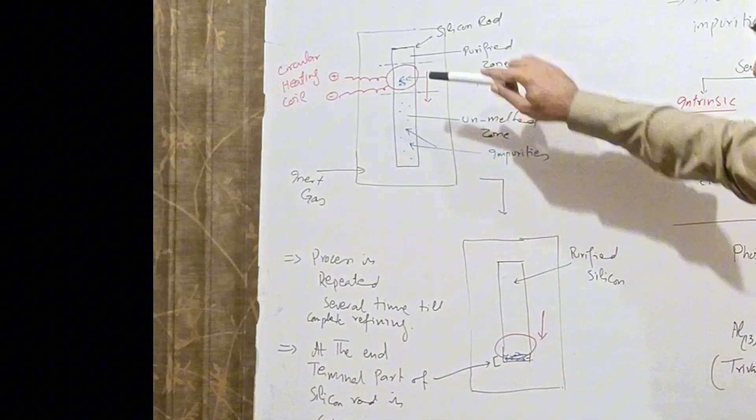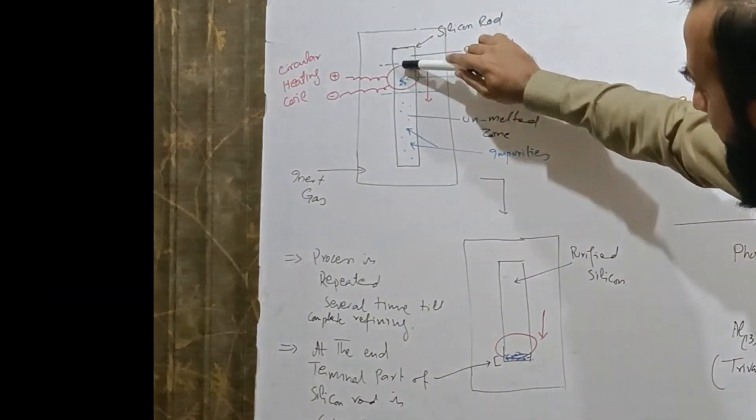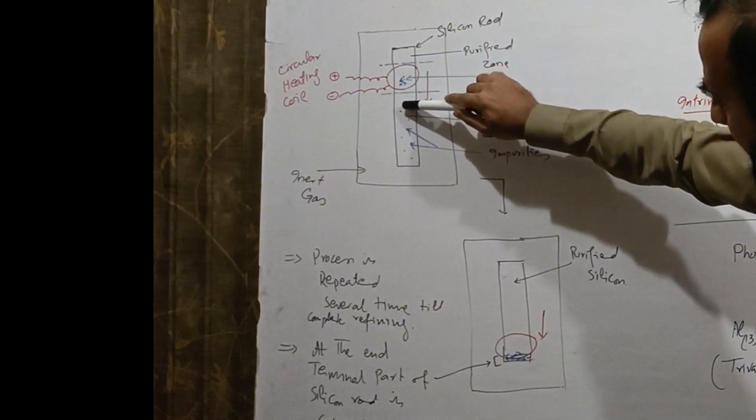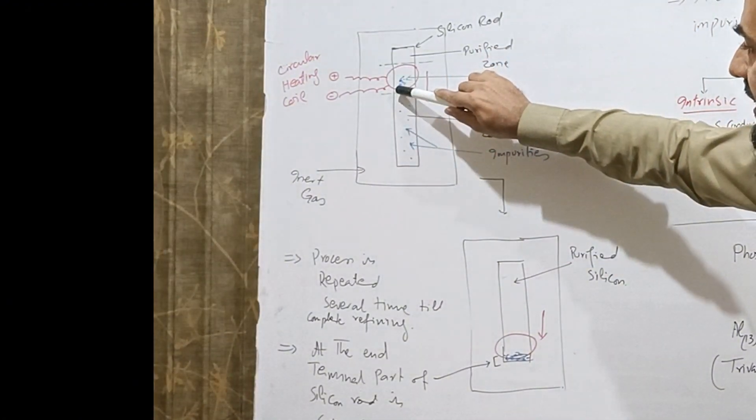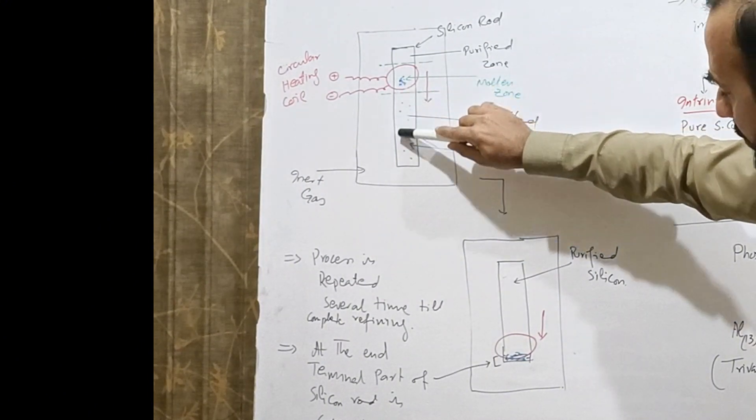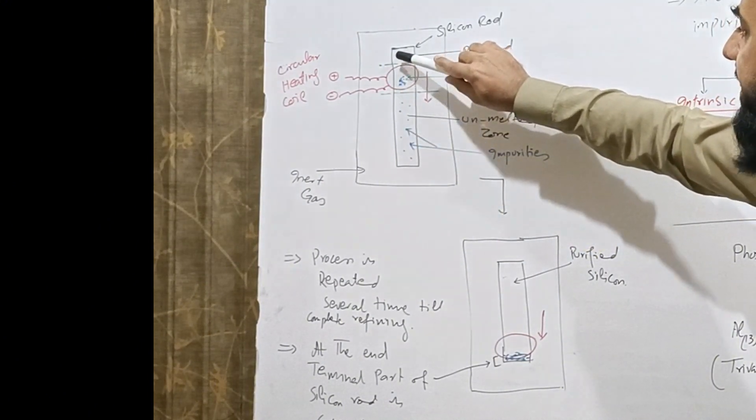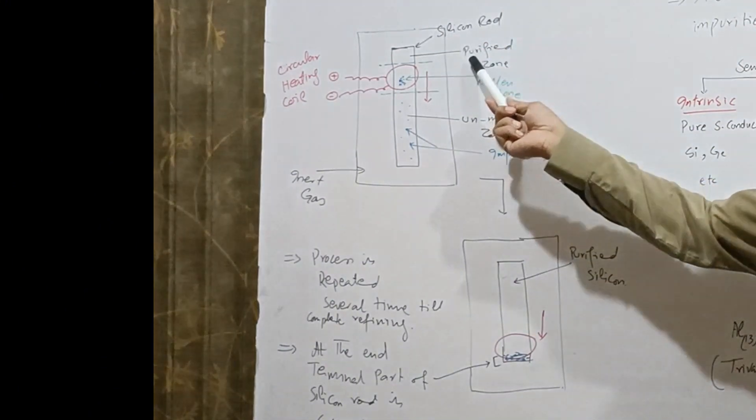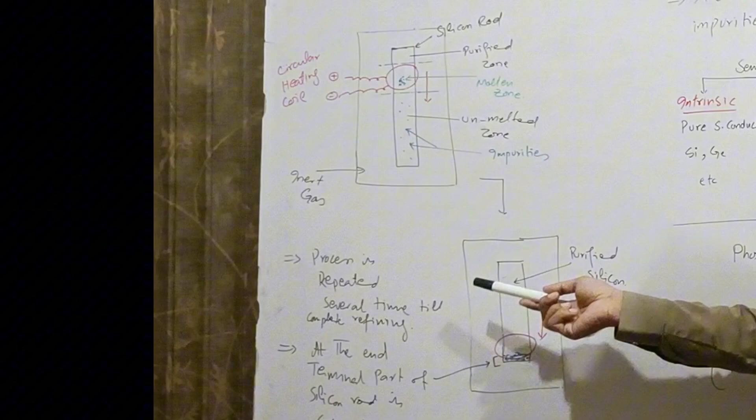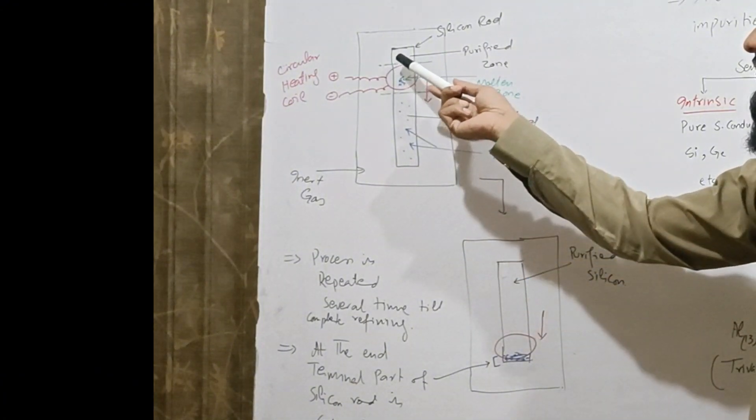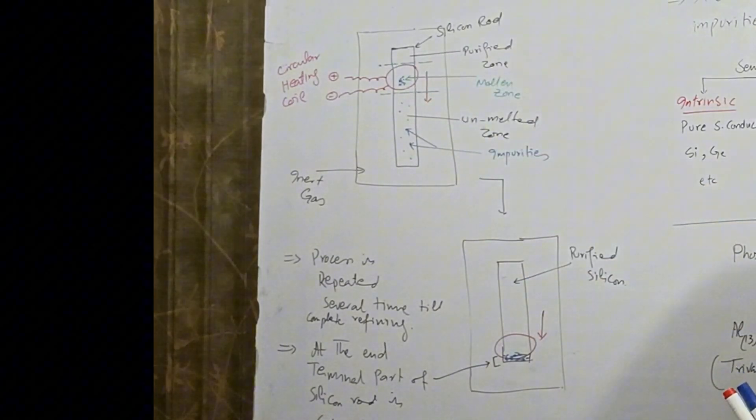When this coil moves along this rod, it carries all the impurities along with it. When the coil moves downward, then the upper part recrystallizes in the form of purified silicon. This process is repeated several times till the formation of purified silicon.